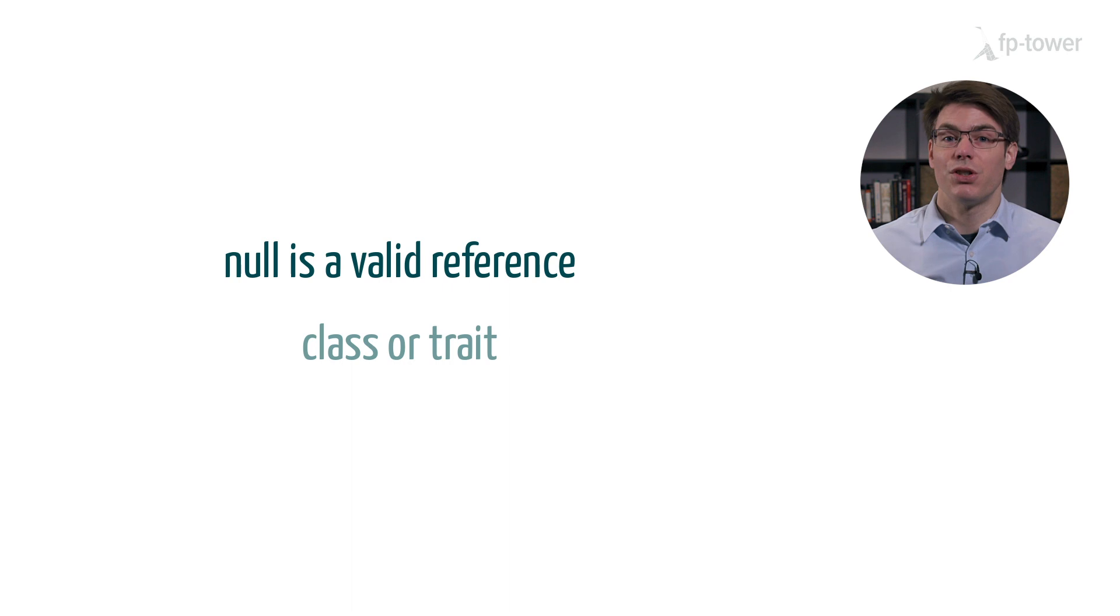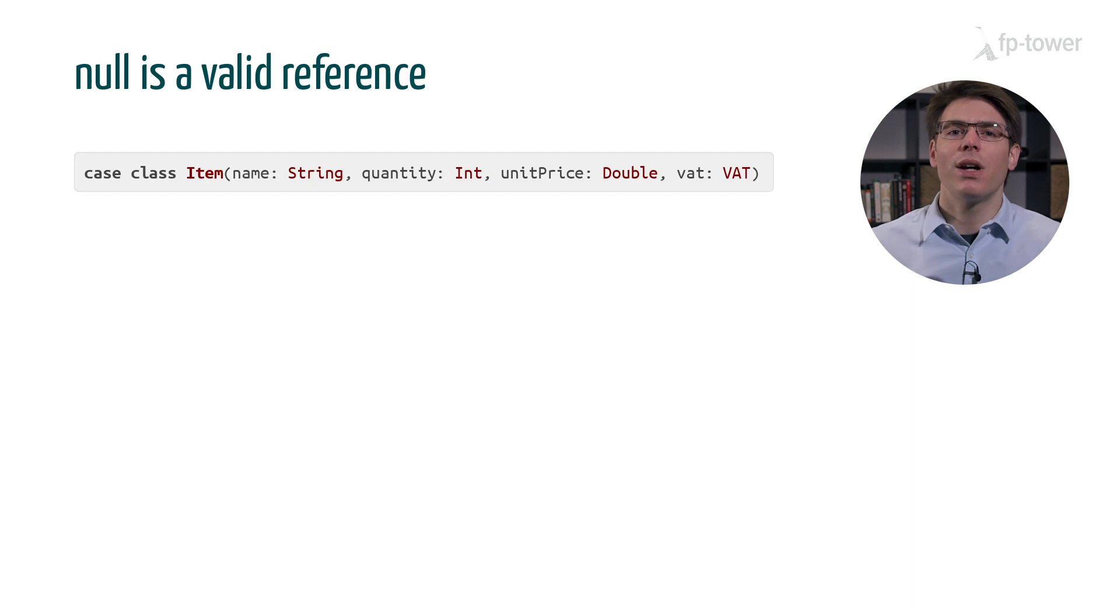The first point concerns null. Null is a valid value for any reference in Scala, meaning for anything defined using the class or trait keywords. For example, we can define a case class called Item containing a name, a quantity, a unit price, and a VAT type.